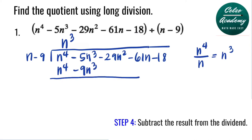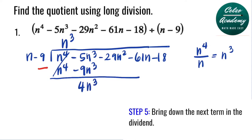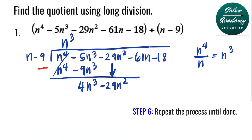Now we subtract: n to the 4th minus n to the 4th is 0. Negative 5 minus negative 9 is 4, so we have 4n cubed. Now we bring down the next term, negative 29n squared, and repeat the process.